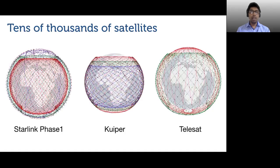Constellations consist of multiple low-Earth orbit or LEO shells of satellites, which vary in height and inclination. And within each shell, there are multiple orbits and satellites per orbit.